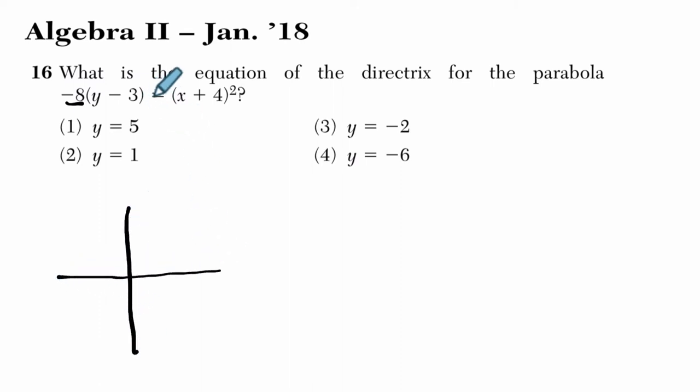And I also notice the vertex is at negative 4, the opposite of this number, and the opposite of this number, 3. So we'll go over 4, 1, 2, 3, 4, and then down 3, 1, 2, 3.